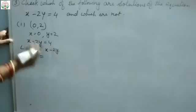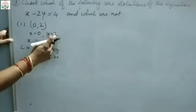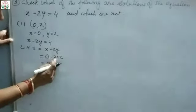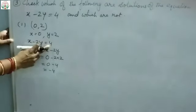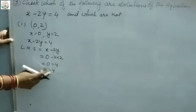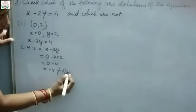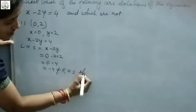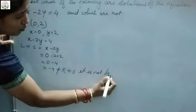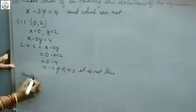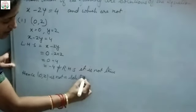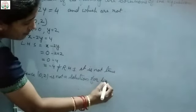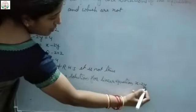Now put the value of x: 0 minus 2 multiplied by y, which is 2. So 0 minus 2 into 2 equals minus 4. Now compare with the RHS. The RHS value is positive 4, but here we got negative 4, so LHS is not equal to RHS. That means it is not true. Hence, (0, 2) is not a solution for the linear equation x minus 2y equals 4.